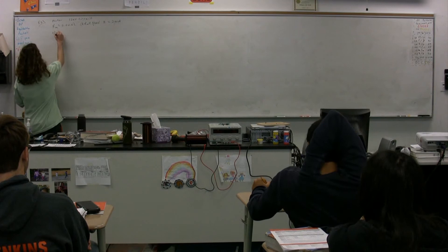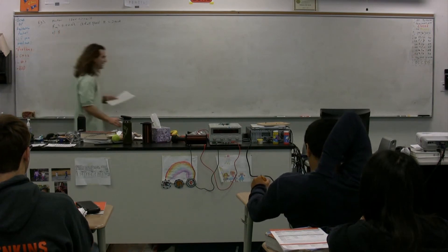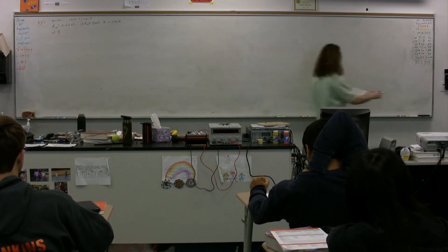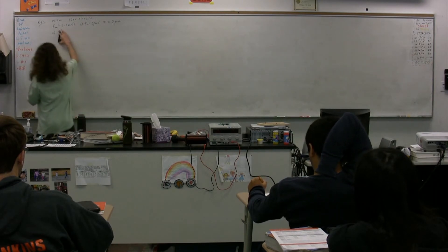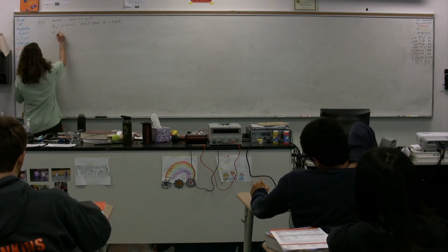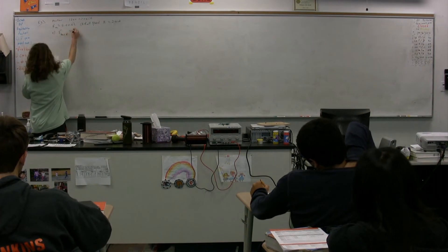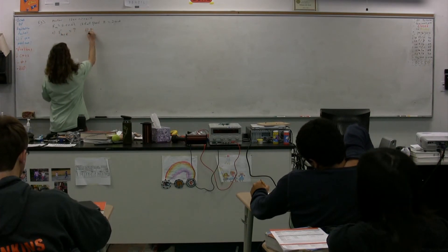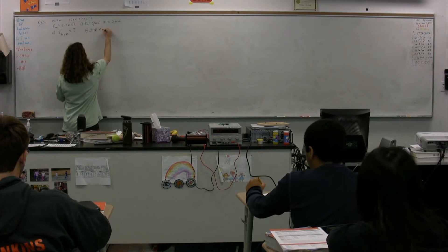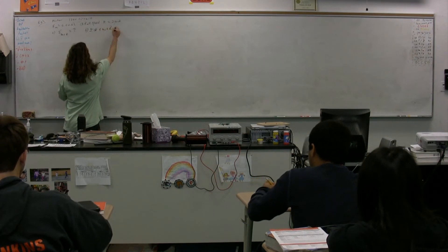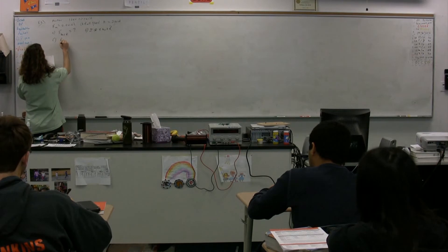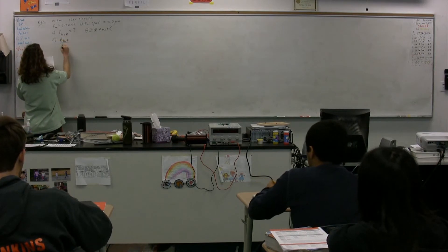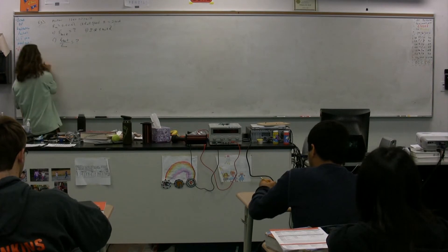So Part A: the question is, what is the back EMF? We usually symbolize that with a specific notation. Part B: what is the current at the start? And Part C: what is the power at the start — specifically the ratio of the power when it starts up versus the power when it is running at full speed?